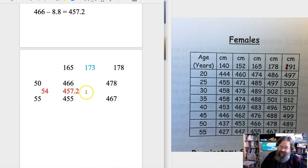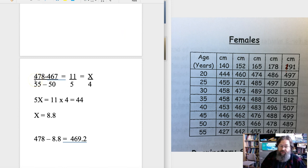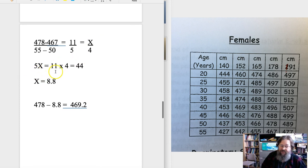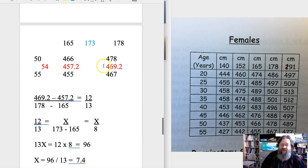So what we're going to do is add in 457.2 as our extrapolated value for age 54 at 165 centimeters. We now need to do the same thing for 178 centimeters. At 178 centimeters, we've got the 478 at age 55 and 467 at age 50, which is a difference of 11 over 5 years, and we want to know what the difference will be over 4 years. So we're doing this the same way: cross multiplying, 5X equals 11 times 4 or 44, X equals 8.8. And this time what we have to do is take that 8.8, the expected decrease over 4 years time, and subtract it from 478, which gives us 469.2.